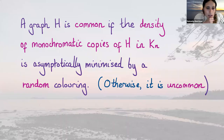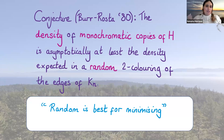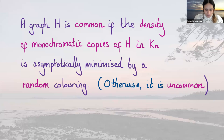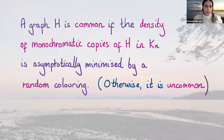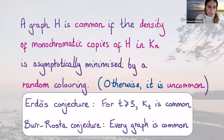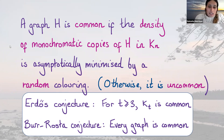Let me just define some terminology. A graph H is called common if the density of monochromatic copies inside the clique is asymptotically minimised by a random colouring, and uncommon otherwise. So what do these conjectures say? Erdős's conjecture says that K_t for t at least three is common, and the Burr-Rosta conjecture says every graph is common.